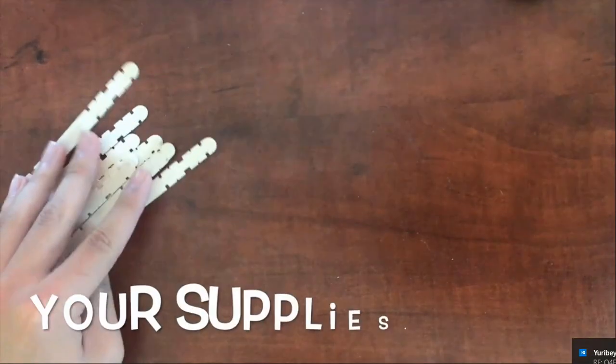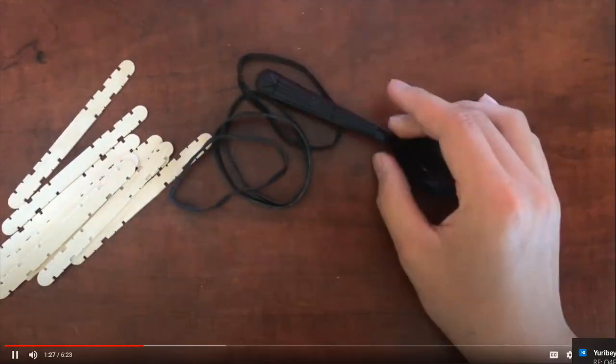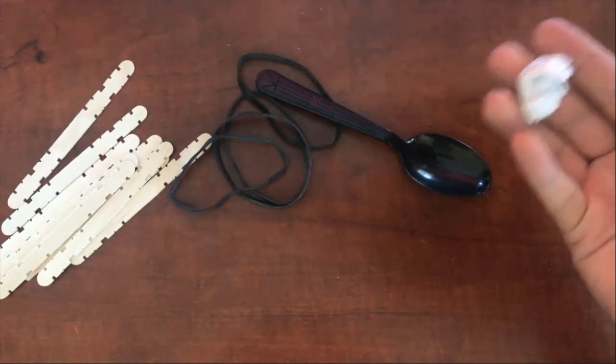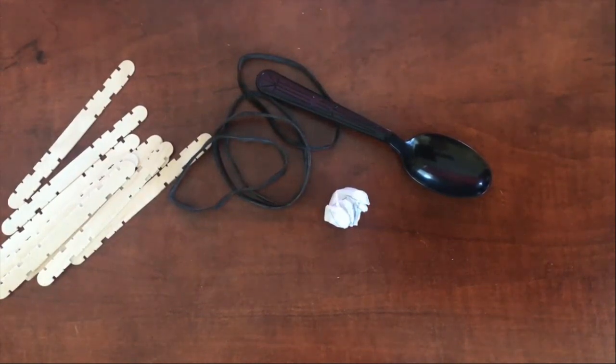You're going to need about 10 popsicle sticks, a few rubber bands, a plastic spoon, a pom-pom ball, or a couple of pieces of paper. I'll be using a piece of paper. And if you want to decorate your machine, you can use paint, markers, or crayons, but I will not be demonstrating this.